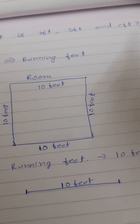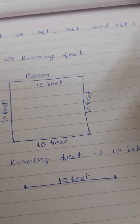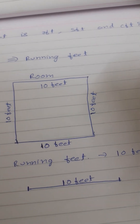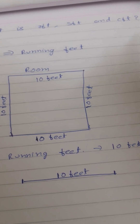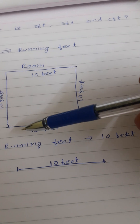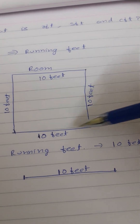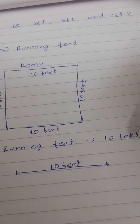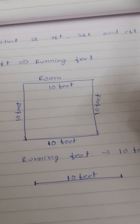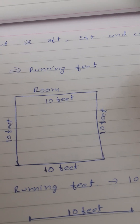For a room, if we have to take a distance from one point to another point, then we will calculate it in running feet. So running feet, in the above example, is 10 feet.